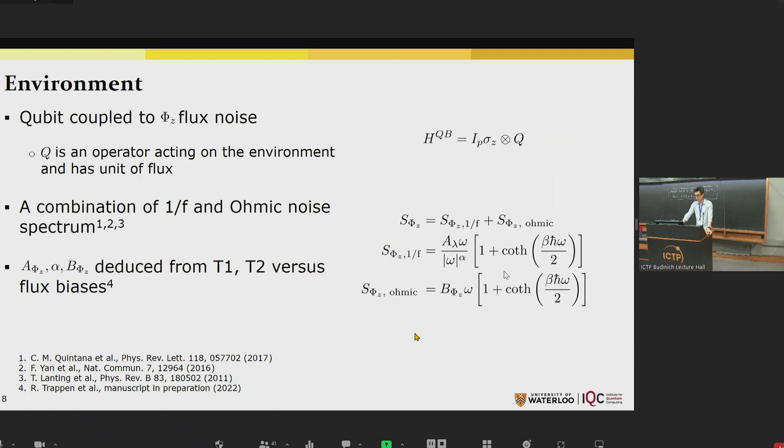Next, I'll discuss our open system models to try to understand the data. We consider a qubit coupled to the Z flux noise given in this form H_QB. The flux noise operator Q couples to the qubit sigma-z operator with a proportionality constant of I_P, which is the persistent current of the qubit. We consider a combination of 1 over F and ohmic noise spectrum for the flux noise, which is verified and measured by many previous experiments on flux noise. Finally, we deduce the noise amplitude parameters based on our coherence measurements, T1 and T2 as a function of flux biases.